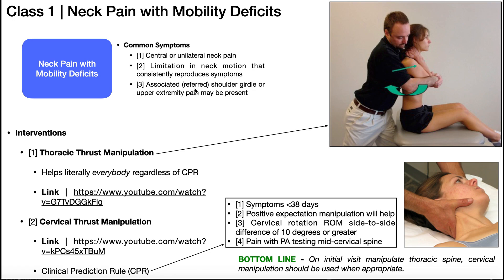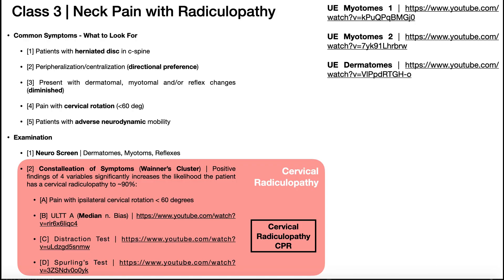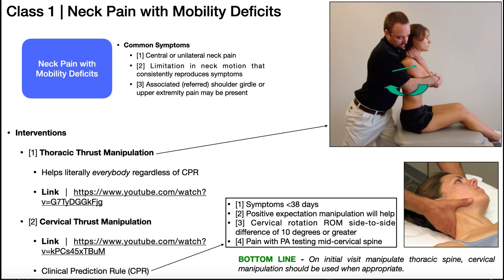They can have some pain referred to the shoulder girdle or upper extremity, but it is not radicular symptoms. If they have radicular symptoms, we're going to put them in class three, which we'll be covering in a couple of videos. So no radicular symptoms with this — it's just that deep aching musculoskeletal pain that is reproduced consistently with a particular neck movement.